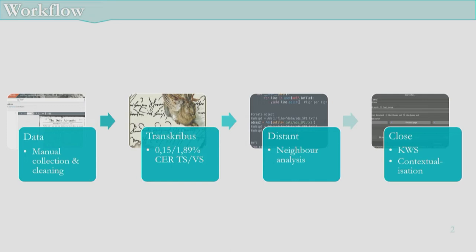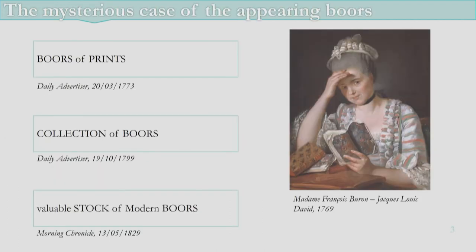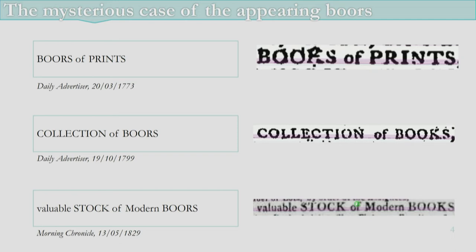My methodology is two-pronged: first I do a distant reading in the form of digital text analysis and neighbor analysis amongst other things, and then I do a close reading with keyword search for contextualization. After performing one of these digital text analyses, I found about 500 'boars' being offered for sale — classical boars, boar cases, boars of prints, collections of balls, valuable stock of modern balls — and these appear consistently throughout my research period. So I opened up the transcriber again and did a simple search.